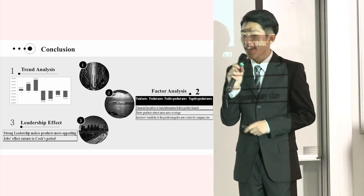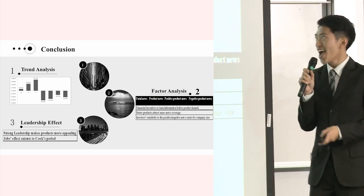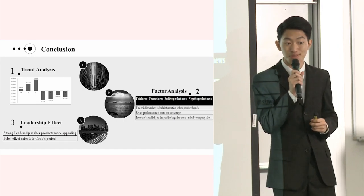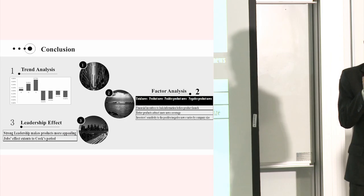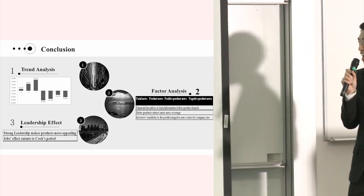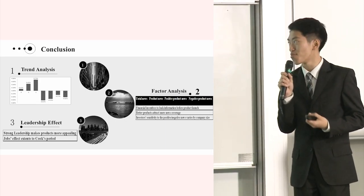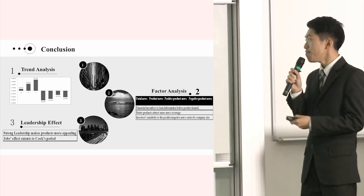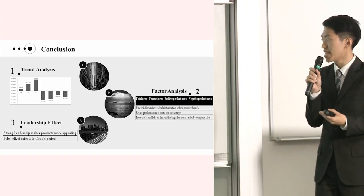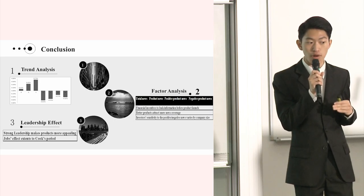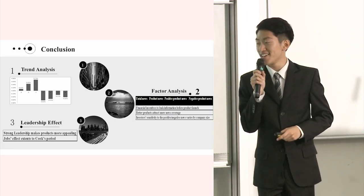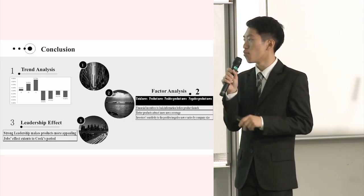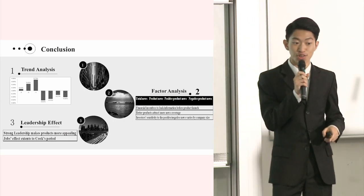Here comes the conclusion. In total, we have three stages in our research. On the first stage, we did a trend analysis to find an interesting pattern of stock returns during the new product launch period. On the second stage, we identified four main factors that influence these patterns and identified three key interpretations: institutions have financial incentives to leak information to the market, better products attract more news coverage, and investor sensitivity to positive or negative news varies by company size. On the final stage, we did a case study on Apple's leaders, Jobs and Cook, and found that strong leadership makes products more appealing and Jobs' effect extends to Cook's period.